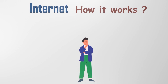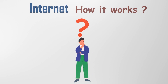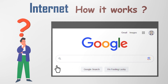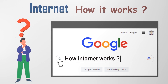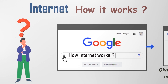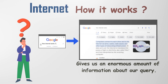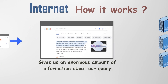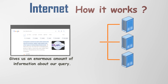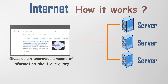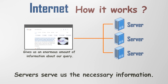How the Internet Works. In modern days, when we need to know something, we just have to ask the question from the Internet. It gives us an enormous amount of information about our query. Where does it come from? This information is stored in special computer systems that are connected together.